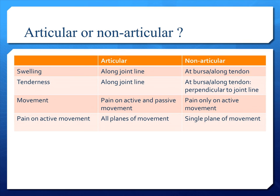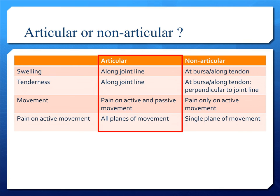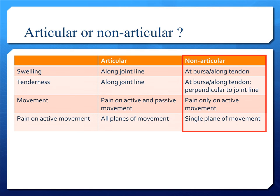So how do we differentiate them clinically? For patients with articular joint involvement, they often have swelling as well as tenderness along the joint line, and they often have pain on active and passive movement on all planes of movement. As for patients with non-articular involvement, the tenderness and swelling is often at the bursa or along the tendon, and pain only happens on active movement and at a single plane of movement.